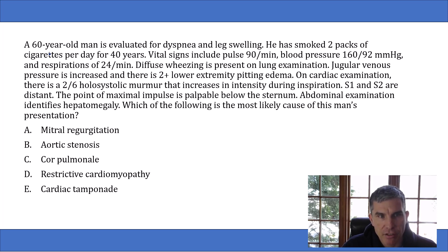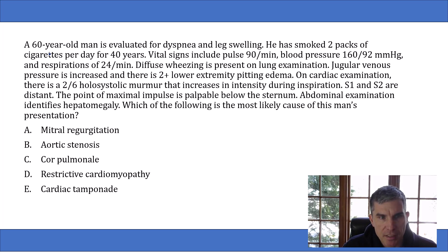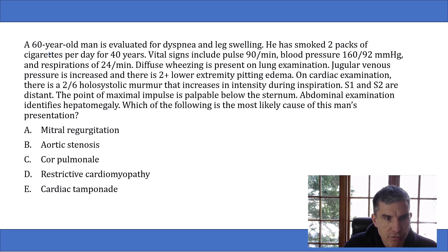On cardiac examination, there is a 2 out of 6 holosystolic murmur that increases in intensity during inspiration. S1 and S2 are distant. The point of maximal impulse is palpable below the sternum. Abdominal examination identifies hepatomegaly. Which of the following is the most likely cause of this man's presentation? The answer choices are mitral regurgitation, aortic stenosis, cor pulmonale, restrictive cardiomyopathy, and cardiac tamponade.